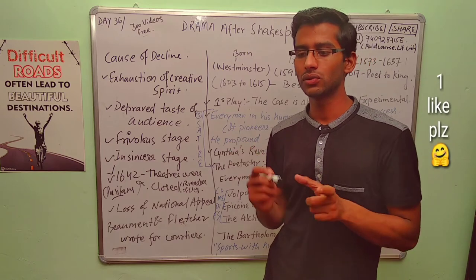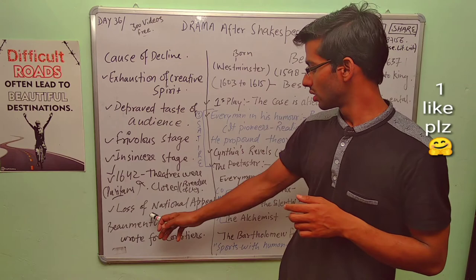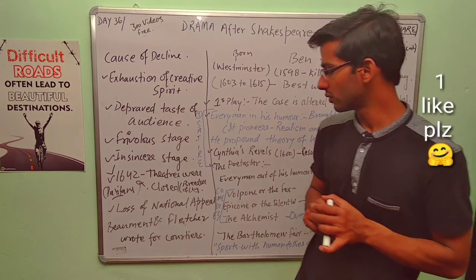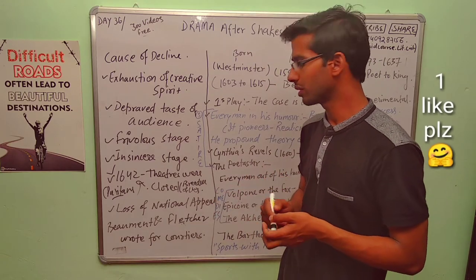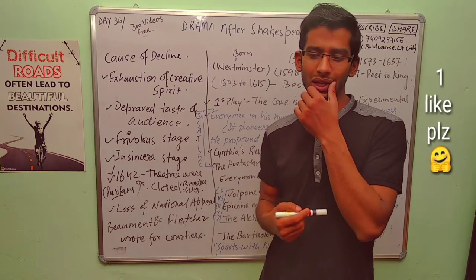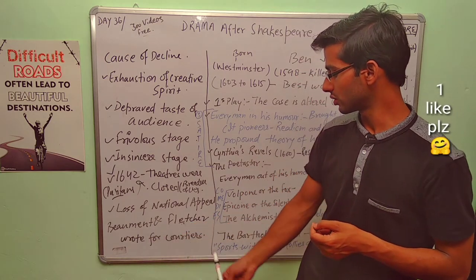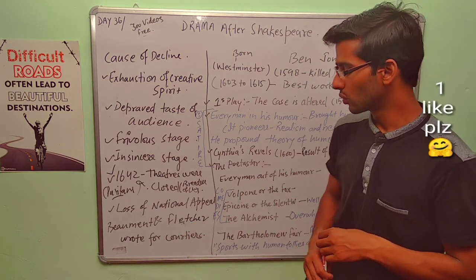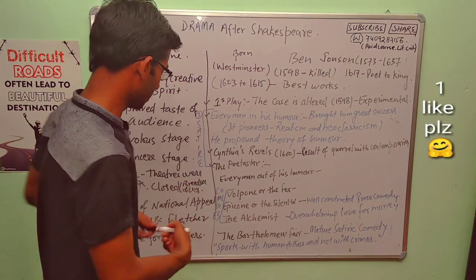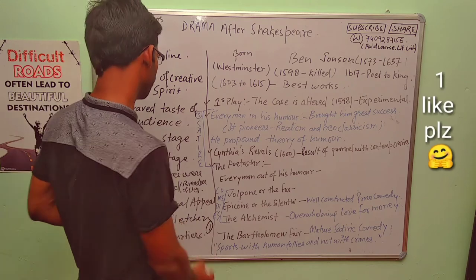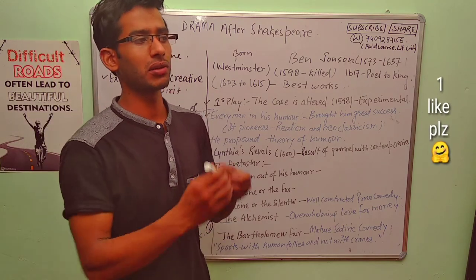And you can make this correlation 26 years later after Shakespeare. Loss of National Appeal. Now you will not see what you will see. If we have Ben Jonson's place, we will not see what you will see like in Shakespeare. Beaumont and Fletcher wrote for courtiers. Here you can see Beaumont and Fletcher. This is an important fact. In this time, he wrote for courtiers.